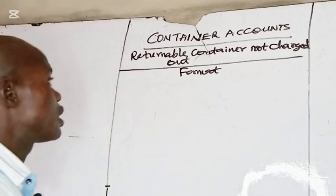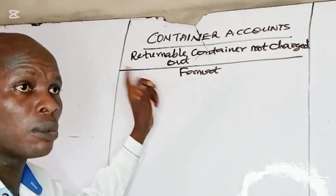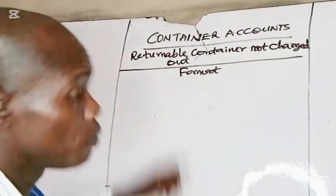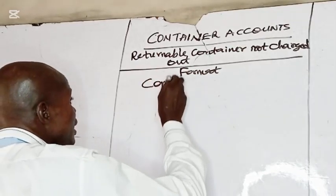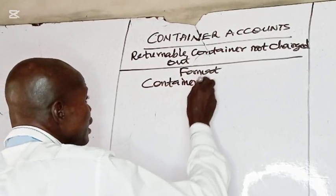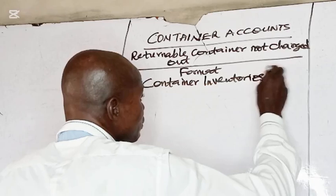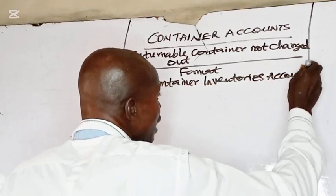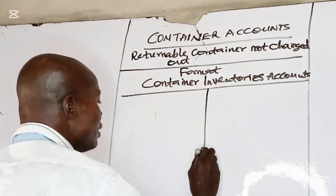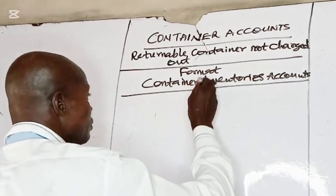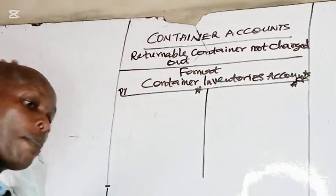Accounting for returnable containers not charged out is straightforward — more straightforward than returnable containers charged out. We open the Container Inventory Account, which has a debit side and a credit side.